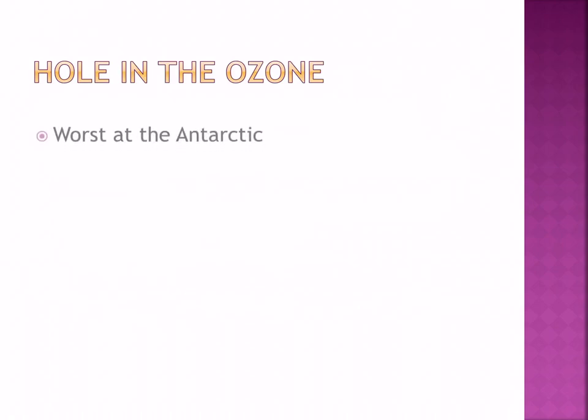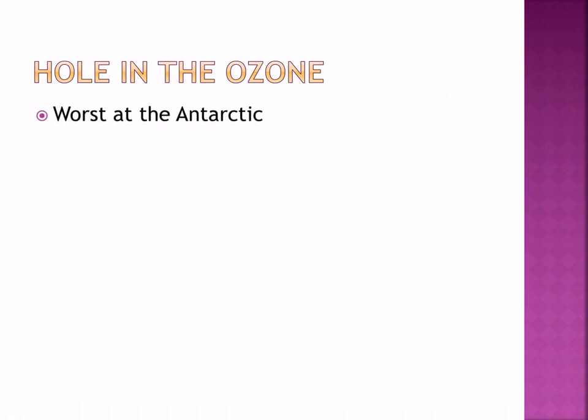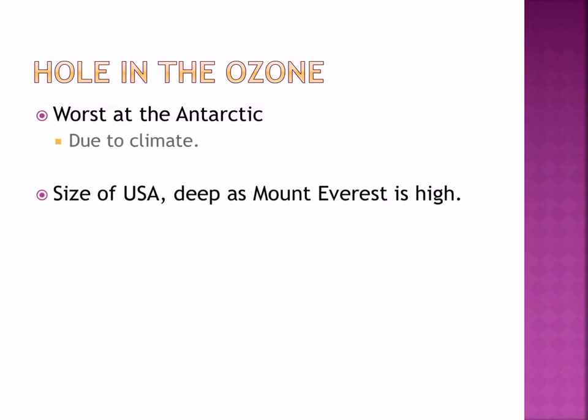The hole in the ozone layer is huge. It's mainly over the Antarctic due to wind currents — the way in which the wind blows means the CFCs congregate over the Antarctic. The depth of the hole in the ozone layer is as high as Mount Everest, and it's as wide as the USA.